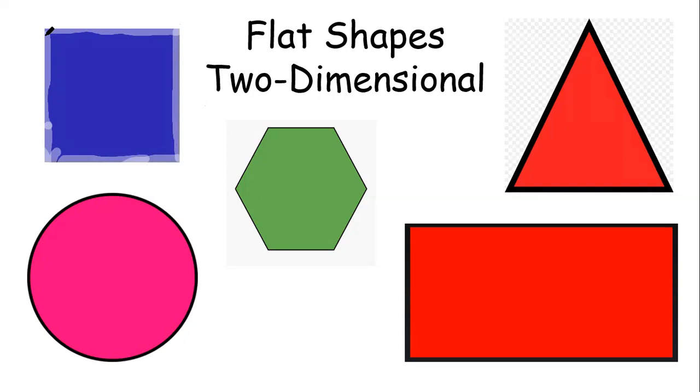So my square has four sides. Does anyone know what else is special about a square? Does anyone know what all four sides of the square are? They're equal in length. Awesome.